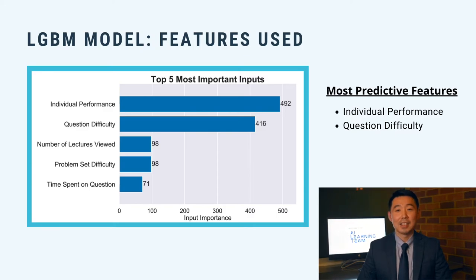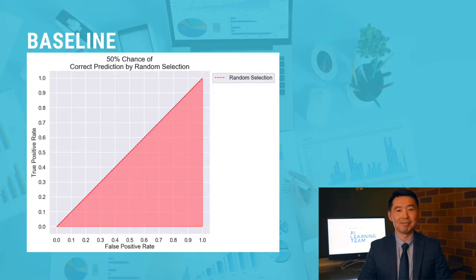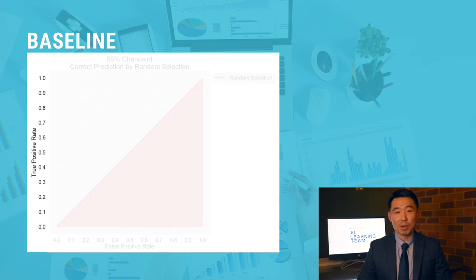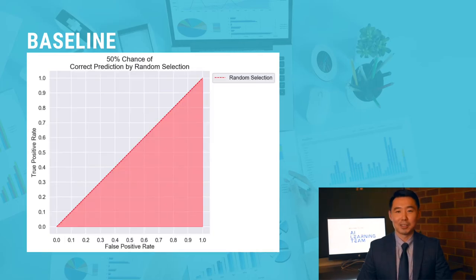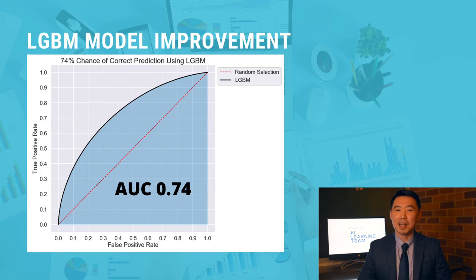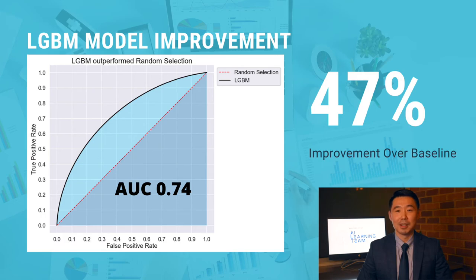Now let's review how we gauge the model's performance. We set a benchmark by creating a baseline model that makes random predictions as to whether a student will answer a question correctly. The x-axis in the graph represents the false positive rate — the percentage of questions predicted to be correct that students got wrong. The y-axis represents the true positive rate — the percentage of questions predicted to be correct that students got right. The red area, also known as the AUC or area under the curve, represents how often the baseline made a correct prediction: approximately 50% of the time. Our best model, LGBM, represented by the blue area, surpasses the baseline by 47%.